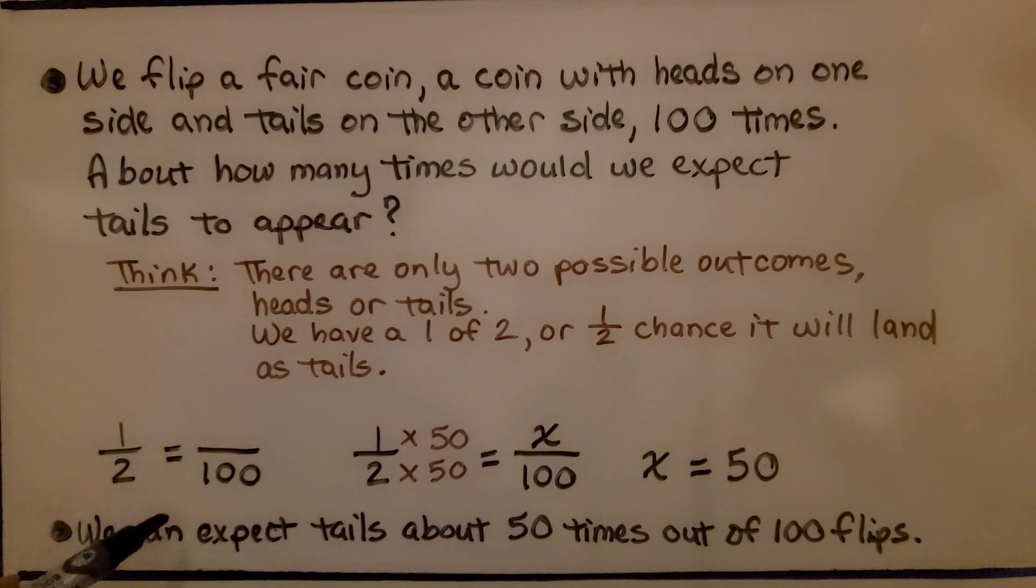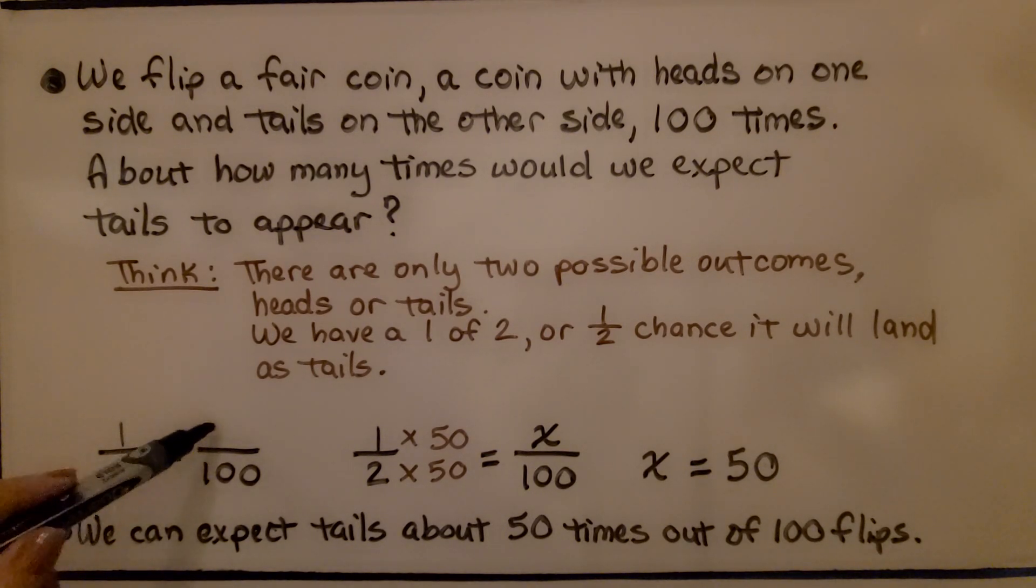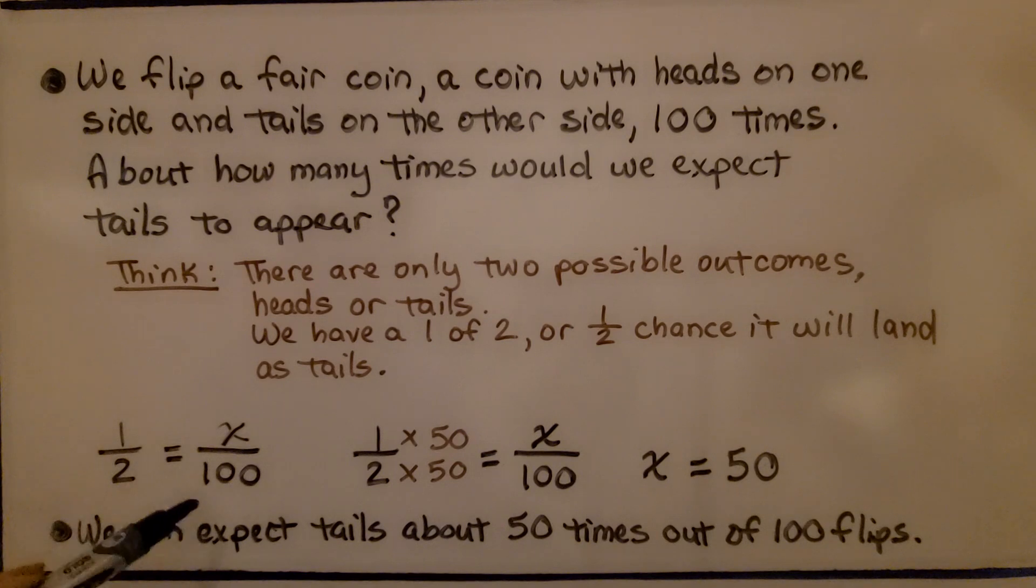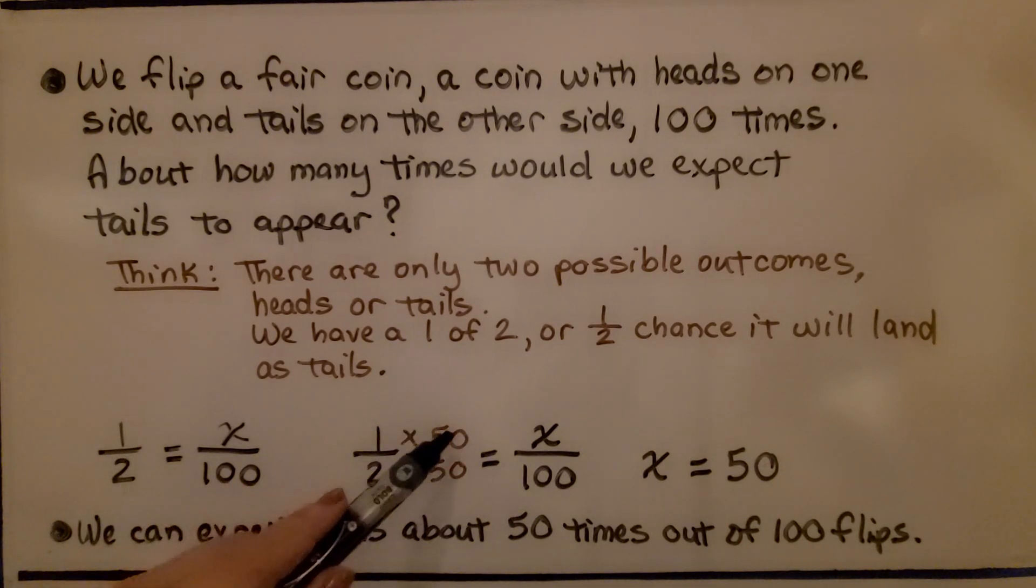Out of 100 times, we find 1/2 is equal to some amount over 100. And we think 2 times 50 is equal to 100. We multiply the numerator by the same thing. We find that x is equal to 50. We can expect tails about 50 times out of 100 flips,